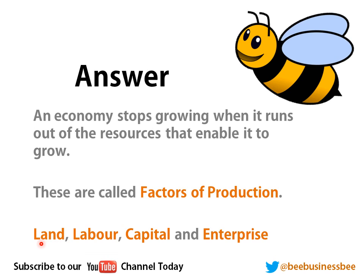You can't build all over the greenbelt unless the government changes its policy, which ties into PESTLE factors covered in another video. Another factor is labour — you may run out of the physical number of workers to work in your business. This is when the economy reaches full capacity, with exceptionally low unemployment and no more skilled workers available. You could also run out of physical money to expand your business, or the banks may cut back on lending. And last but not least, you may run out of enterprise — people coming up with ideas and leading the vision to drive economic growth.